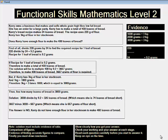First of all, divide 220 grams by 24 to find the required recipe for 1 loaf of bread. 220 divided by 24 equals 9.2 grams. Recipe for 1 loaf of bread is 9.2 grams.